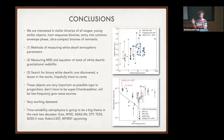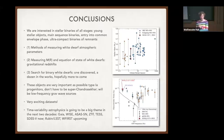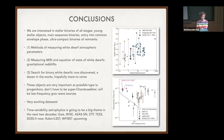We are right now at a few dozen known systems, still discovering new objects within 100 parsecs — there was a discovery of a 26-parsec binary just a couple of years ago. To wrap up: we are interested in stellar binaries at all stages, from young stellar objects to main sequence binaries to common envelope phases to ultra-compact binaries of remnants. We've been learning how to measure white dwarf spectra and the equation of state, and our goal is to search for binary white dwarfs. It was a big surprise to me that sub-Chandrasekhar binaries might be very important as possible type 1a progenitors, and the future is very interesting because time variability astrophysics will continue to be a big theme in the next two decades.